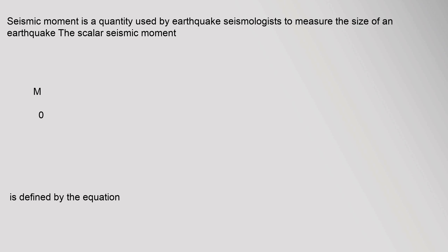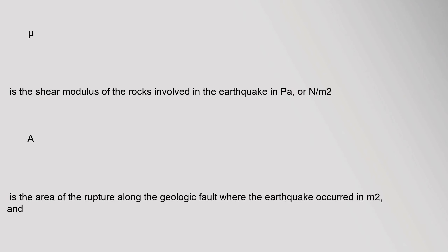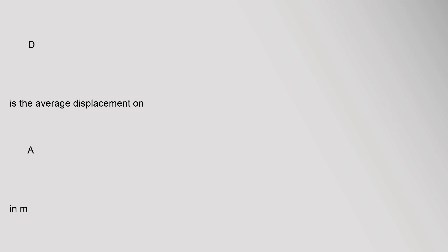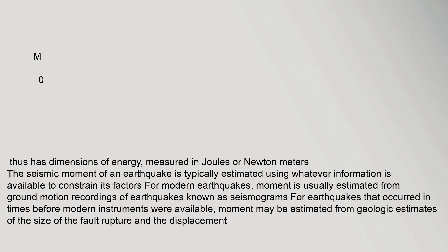Seismic moment is a quantity used by earthquake seismologists to measure the size of an earthquake. The scalar seismic moment M0 is defined by the equation M0 equals D, the average displacement, multiplied by A in meters. M0 thus has dimensions of energy, measured in joules or newton meters.